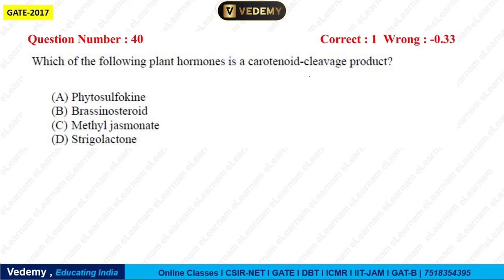Next: Which plant hormone is a carotenoid cleavage product? Options are phytosulfokine, brassinosteroid, methyljasmonate, and strigolactone. The correct answer is strigolactone — its biosynthesis pathway proceeds via carotenoid cleavage.